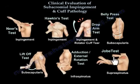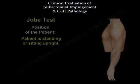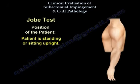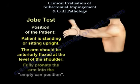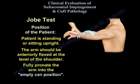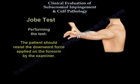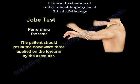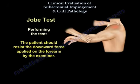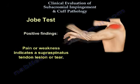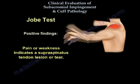Jobe's test. The patient is standing or sitting upright. The arm should be anteriorly flexed at the level of the shoulder and fully pronated into the empty can position. The patient should resist the downward force applied to the forearm by the examiner. Pain or weakness indicates a supraspinatus tendon lesion or tear.